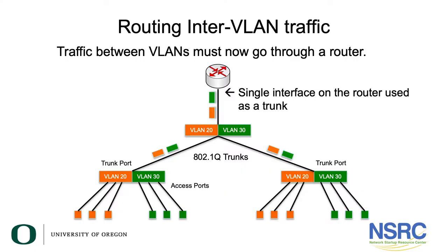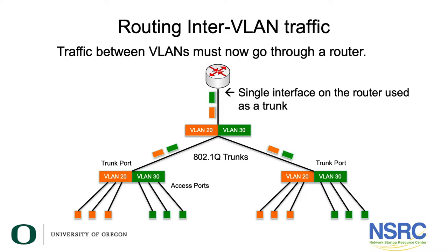Let us discuss how you route inter-VLAN traffic. We mentioned that you are going to typically have a different Layer 3 subnet for each VLAN. Devices will only try to communicate at Layer 2 at the Ethernet layer if they belong to the same Layer 3 subnet — same IPv4 or IPv6 subnet. So if you've split these different VLANs and created different Layer 2 networks, you need the router to move traffic between them, and you can do this in multiple ways.